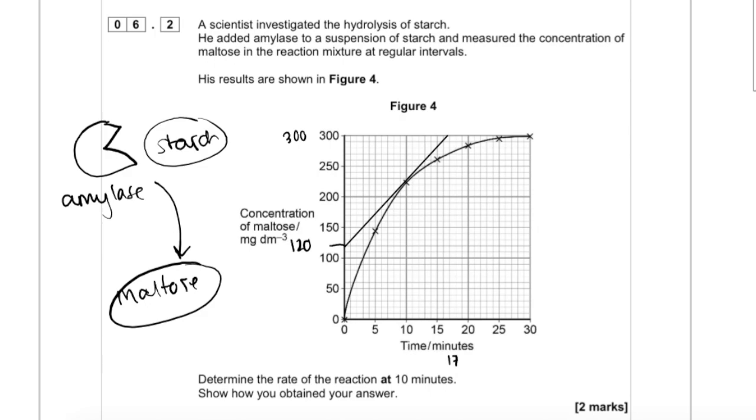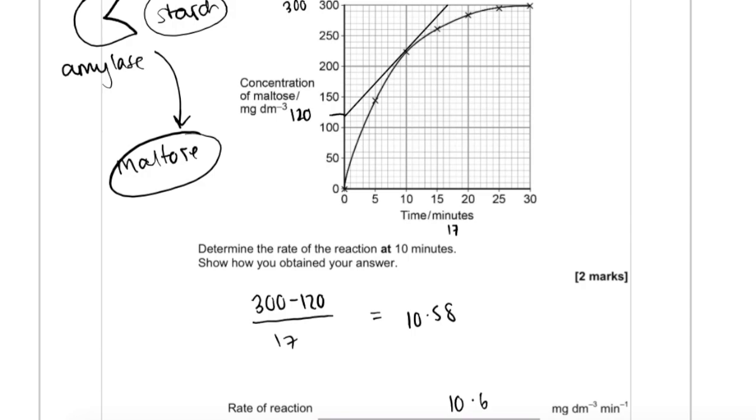So you can see over time you're getting more and more maltose, but this is gradually plateauing off. They've asked you to determine the rate of reaction at 10 minutes and to show how you obtained your answer.